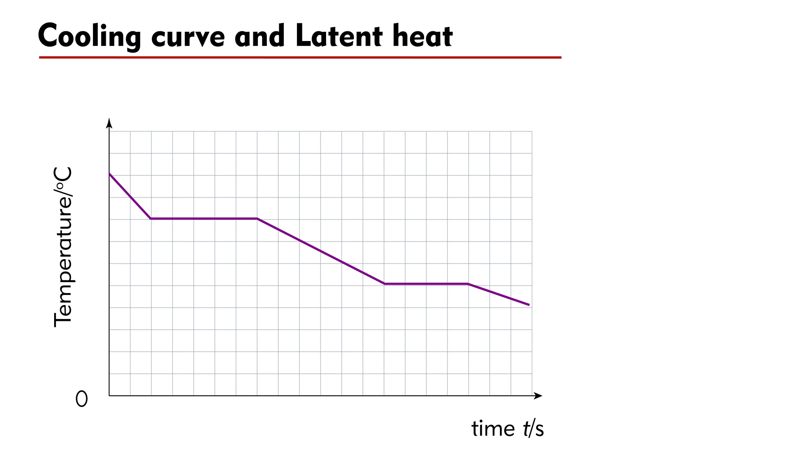The diagram shows a typical cooling curve. It consists of five parts A, B, C, D, and E.